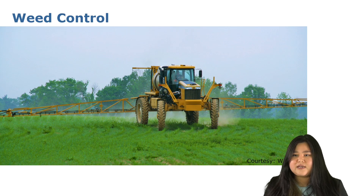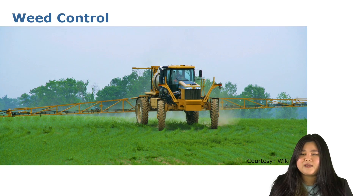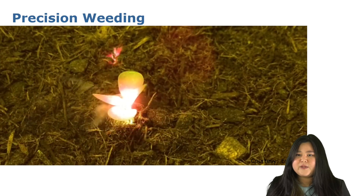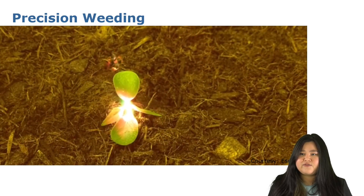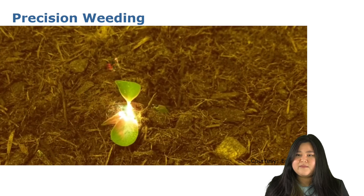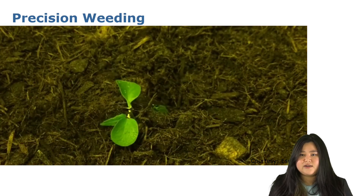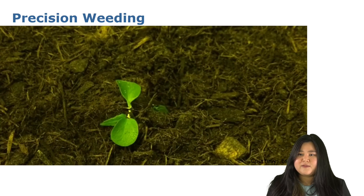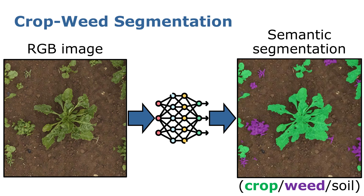Instead, we would like to move towards automated precision weeding with robotics. With precision weeding robots, we can target specific plants and leverage non-chemical methods including laser weeding, shown here. To enable this, we must first be able to automatically distinguish between weed plants and crop plants in the field.